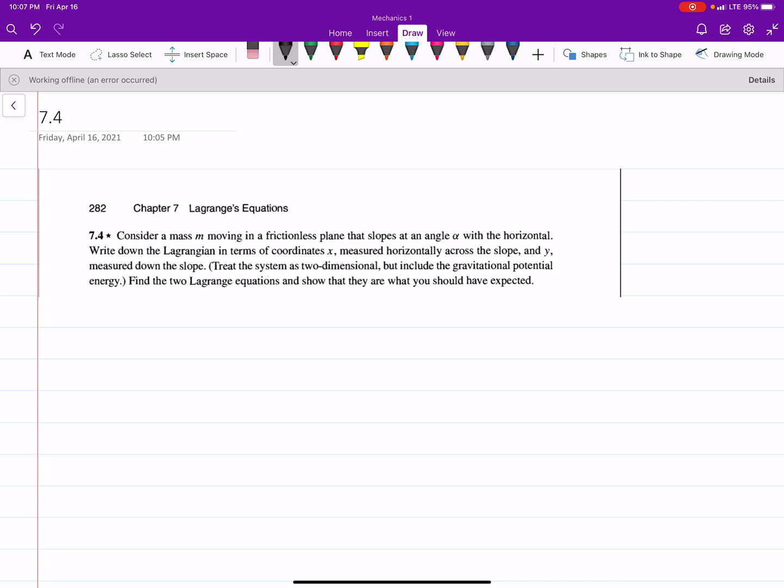It says, consider a mass moving in a frictionless plane that slopes at an angle alpha with the horizontal. Write down the Lagrangian in terms of the coordinate x measured horizontally across the slope and y measured down the slope.